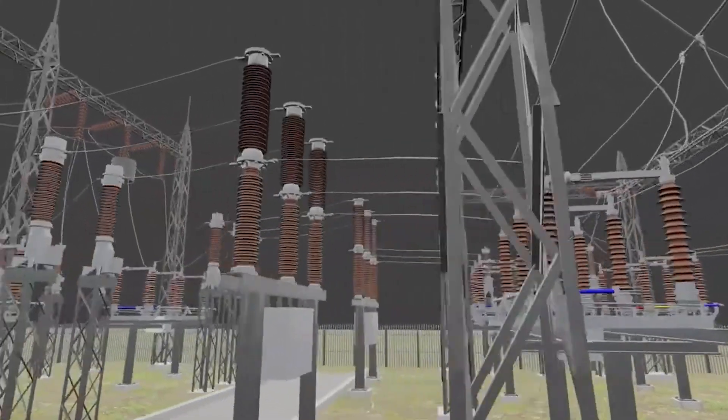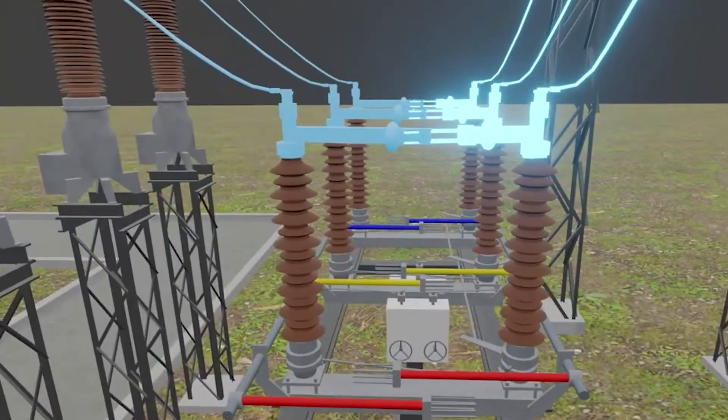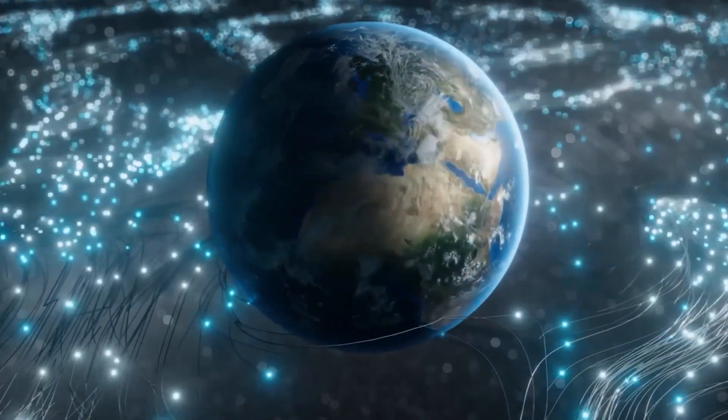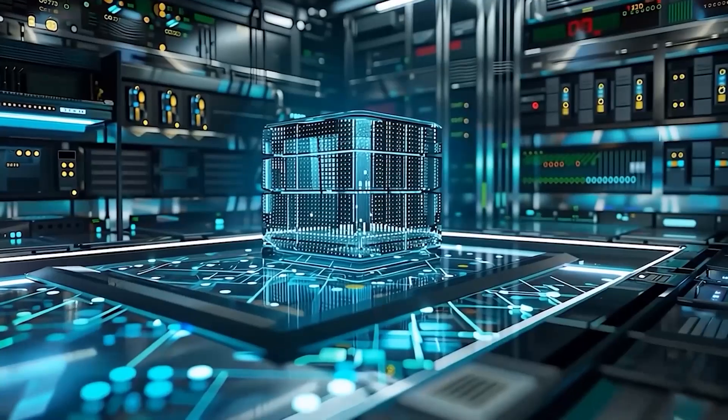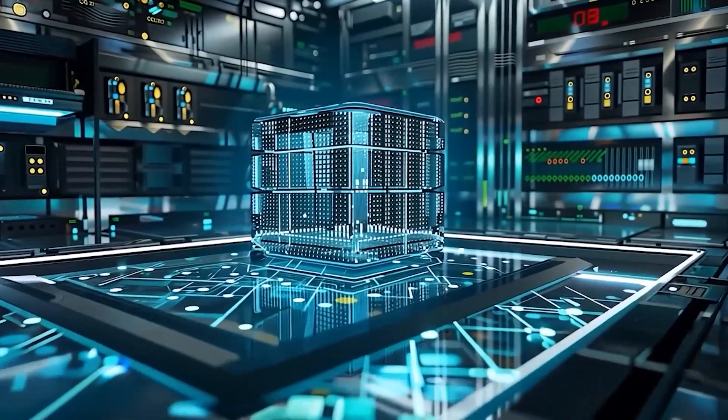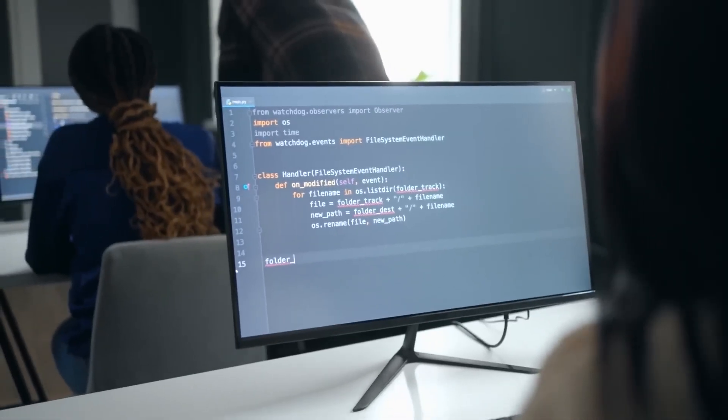Let's talk about something we all depend on: energy. AI systems now manage power grids in real time, balancing supply and demand across entire nations. In 2019, Google's DeepMind AI reduced energy consumption in their data centers by 40%, just by optimizing how they cool their servers. But here's where it gets even more interesting.